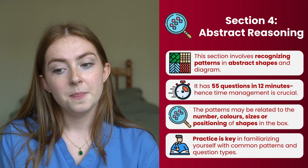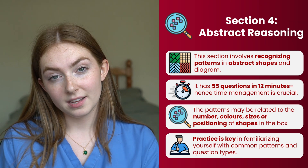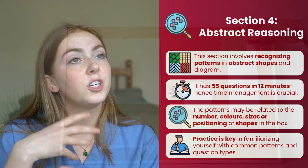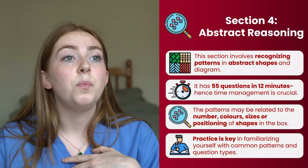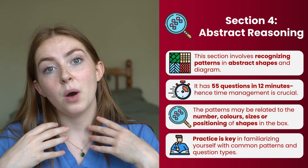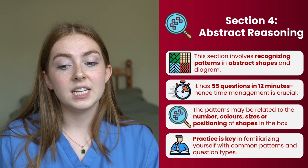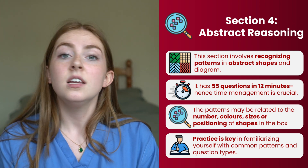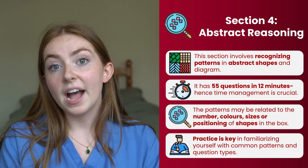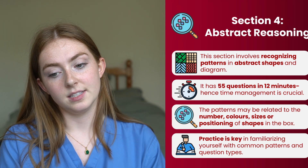The fourth section is abstract reasoning. Here you will have to identify patterns based on abstract shapes and colours. There will be distractors, and it's about whether you can spot the pattern, critically evaluate, generate hypotheses, and query your judgment as you go along when looking at the patterns.